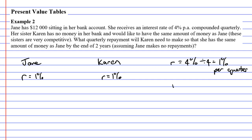We also need to talk about the number of time periods. This is over a period of two years, and it's compounded quarterly. There are four quarters in a year, so 2 times 4 is 8. Both of them have the same time period of eight quarters, because we're trying to see how much money they both have by the end of two years.